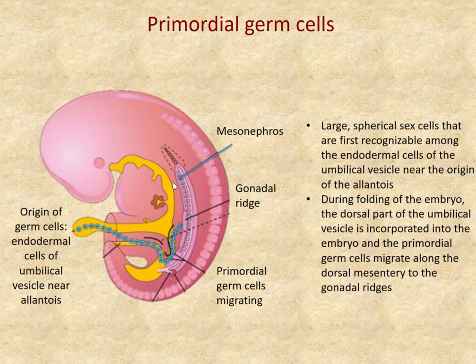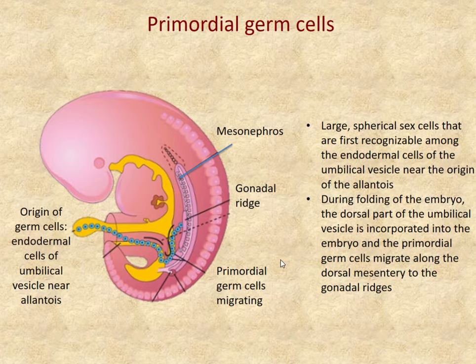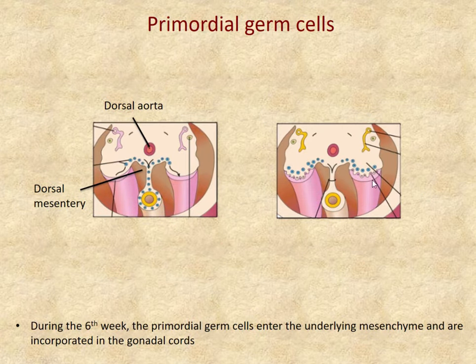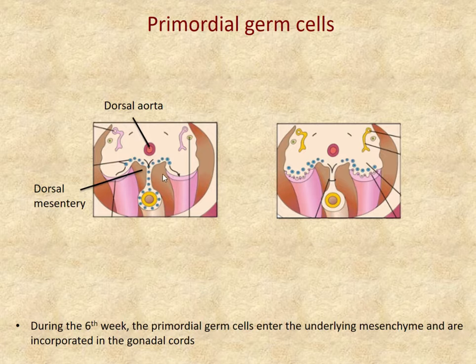The germ cells migrate along the dorsal mesentery to be incorporated into the gonadal ridge. In a transverse section of the embryo, you can see the germ cells migrating along the dorsal mesentery here. The underlying mesenchyme of the ridge is also important in gonadal development.